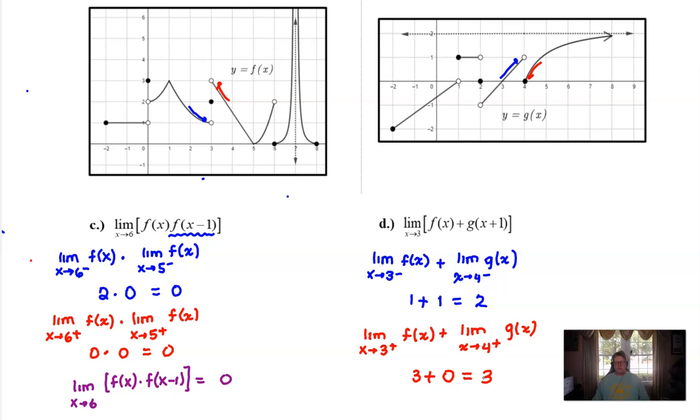Now you look at those two limits and think to yourself, wait a minute, those are not equivalent to each other. So what is it that we can say about the limit as x approaches three of this sum f of x plus g of x plus one? And the answer is does not exist. The two one-sided limits are different values.